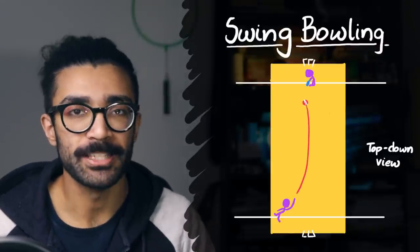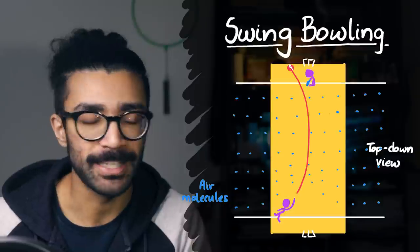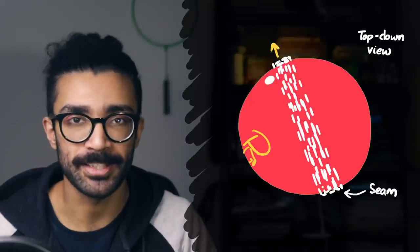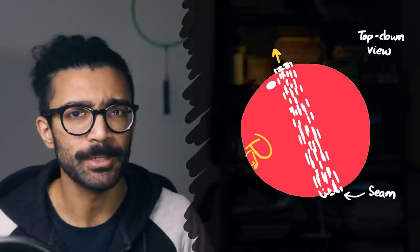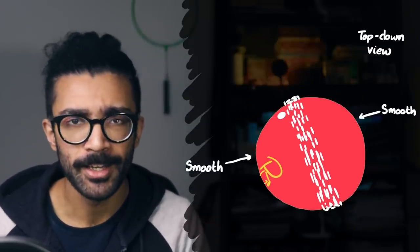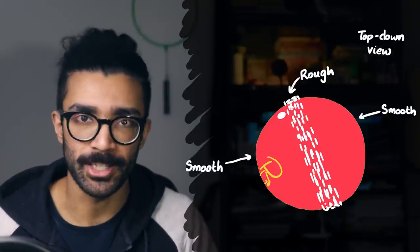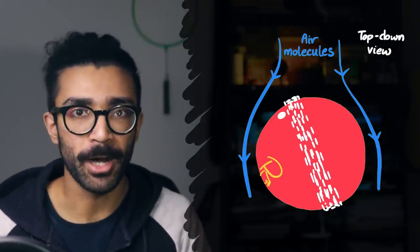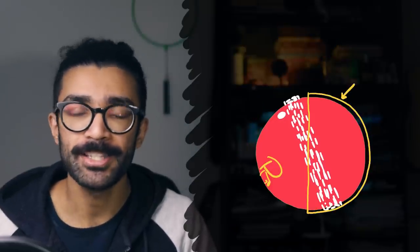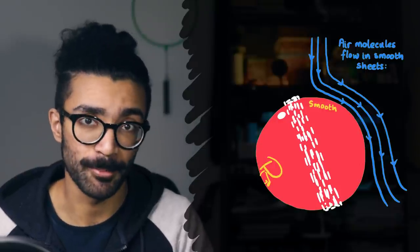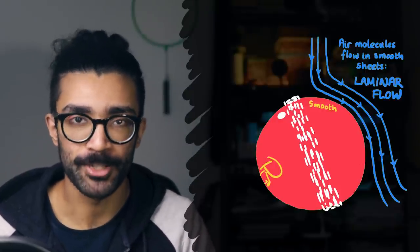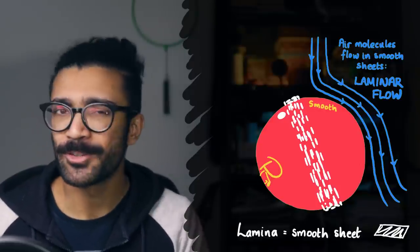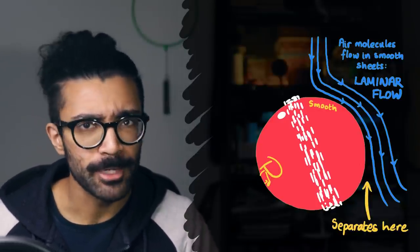As the ball travels through the air from one end of the pitch to the other, it interacts with air molecules that are in its way. These molecules actually end up exerting an uneven force on the ball, specifically due to the direction in which the seam is pointing. With a brand new ball, one that's not been used very much yet, both sides of the ball are pretty smooth and shiny, but the seam is rough because it's made up of stitching. The air molecules moving past this half of the ball will move very smoothly along the smooth surface — this is known as laminar flow, because a laminar is a smooth sheet, and the air molecules basically move in smooth sheets along the smooth surface of the ball. This smooth sheet-like flow tends to separate from the ball relatively quickly.